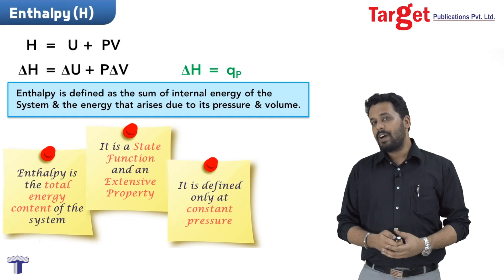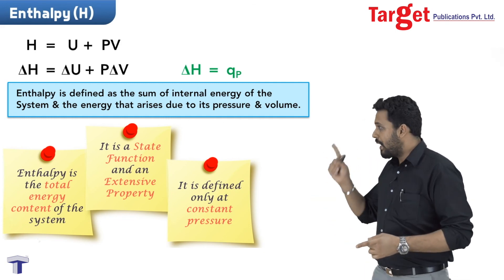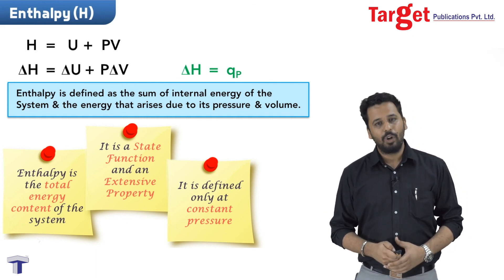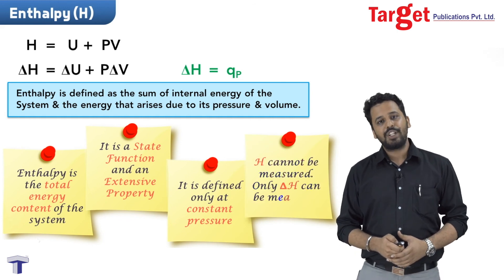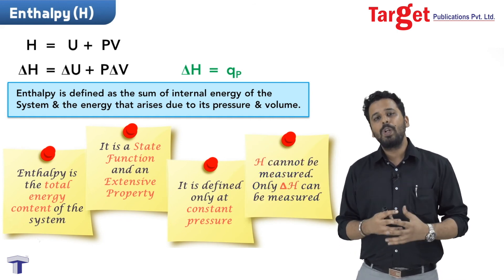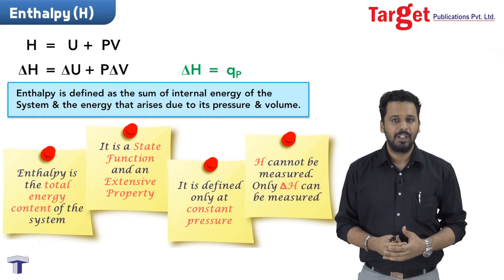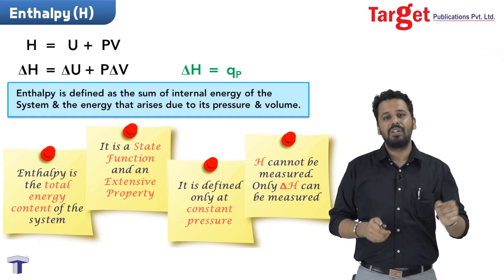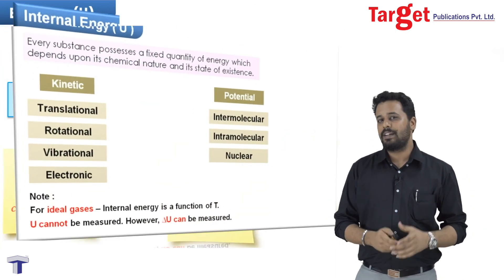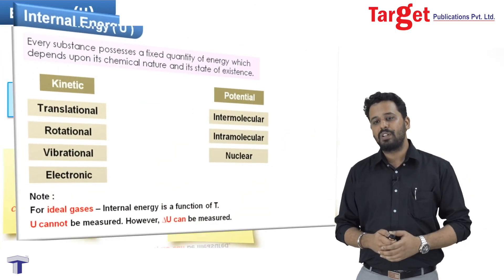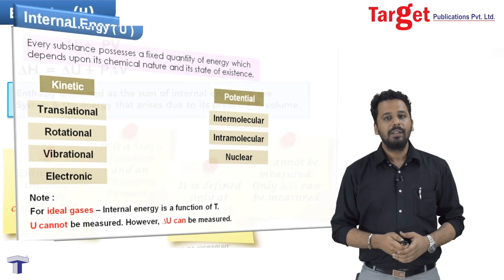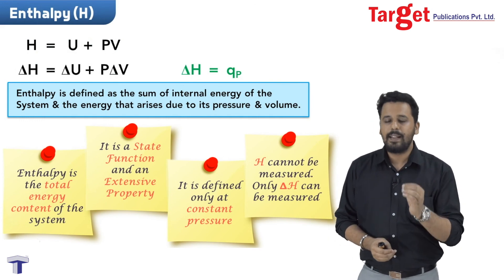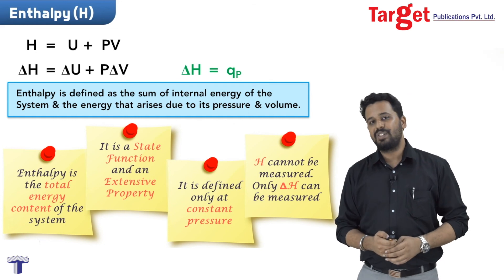Enthalpy is only defined at constant pressure — as we have seen, ΔH = Q_P. Also, H cannot be measured; only change in enthalpy can be measured. The reason is that to measure H we would need to measure U, but internal energy U cannot be measured. However, ΔU can be measured. So since we cannot measure internal energy, we cannot measure enthalpy — but we can measure change in enthalpy.